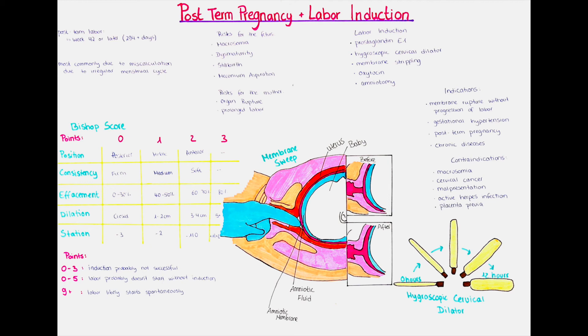Another measure is membrane stripping, also called a membrane sweep. Here, a gloved finger is introduced by the doctor into the vagina and through the cervix, just below the uterine wall at the amniotic membrane. With the finger, the amniotic membrane is carefully separated from the uterine wall, which can induce labor and sometimes also lead to rupture of the amniotic membrane, which will also accelerate labor. The membrane sweep helps to release prostaglandins, which then again help to dilate and efface the cervix.